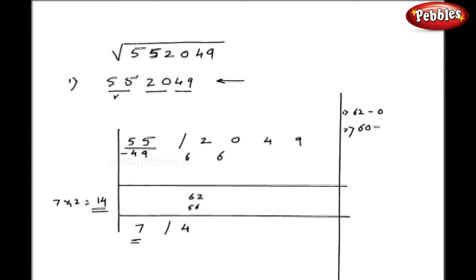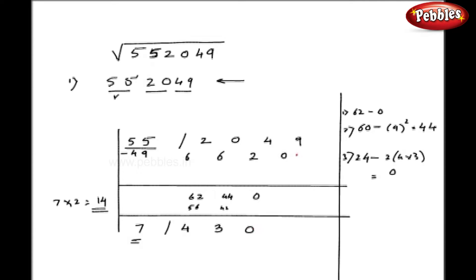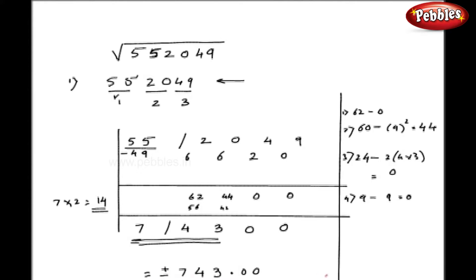From 60 I subtract the Dvandva of 4, that is 4², giving 44. Dividing 44 by 14 I get 3, so again my remainder is 2. From 24 I subtract the Dvandva of 43, that is 2×4×3. My answer is 0, so I write 0 here. 0 divided by 14 is 0, and similarly I get 0, so this process can go on continuously. Now I got 3 pairs, so my answer will be the first 3 figures, and the square root of 552049 is ±743.